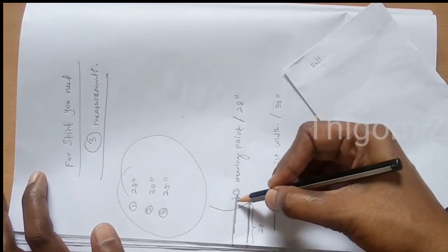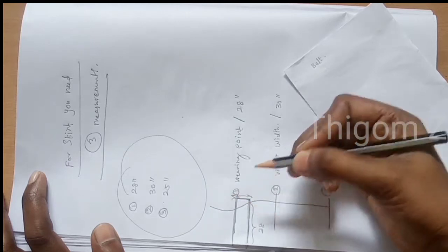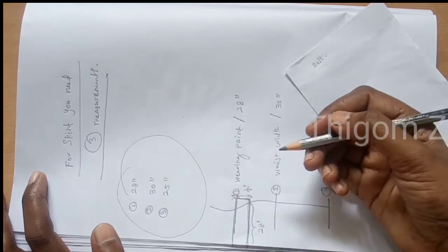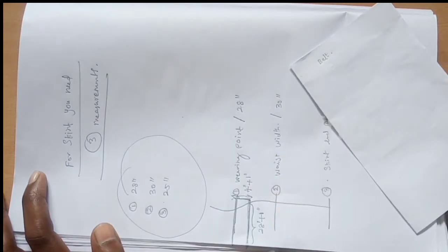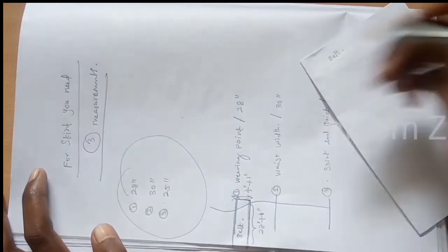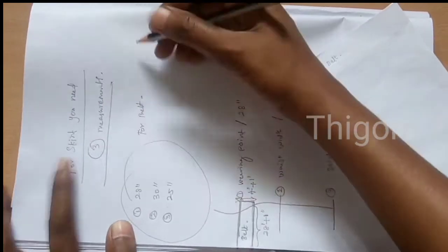So the length of the belt is 28 inches and the width is 4 inches. You need to add 1 inch each for width and length for sewing purposes.